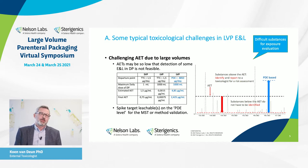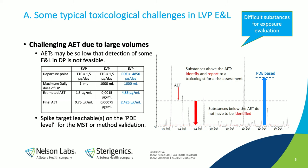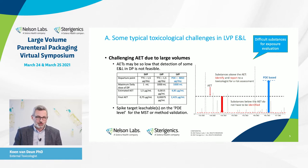Another challenge is the analytical evaluation threshold, which for large volume parenterals is always difficult. Starting from the TTC — the toxicological threshold of concern — which is typically 1.5 micrograms per day, if applied to 1 milliliter, the estimated AET is 1.5 micrograms per milliliter, and the final AET taking into account an uncertainty factor is half of that. When we look at large volume parenterals going to, for example, 1,000 milliliter volume, we end up with a very low estimated and final AET, which might make it very difficult to detect some of the extractables and leachables. Therefore, there is a need to mitigate this problem.